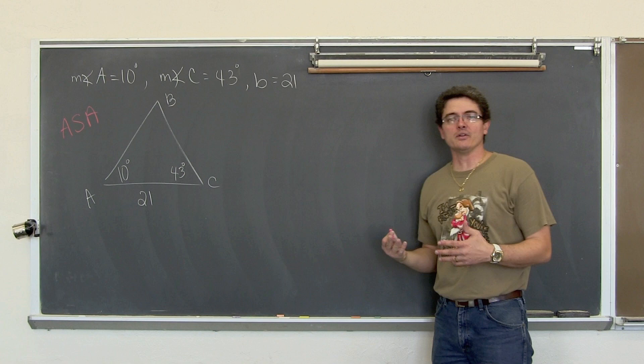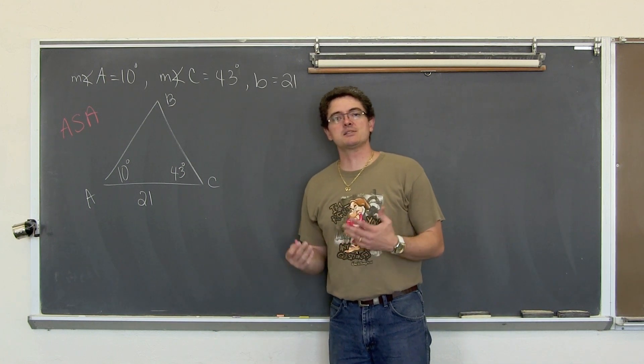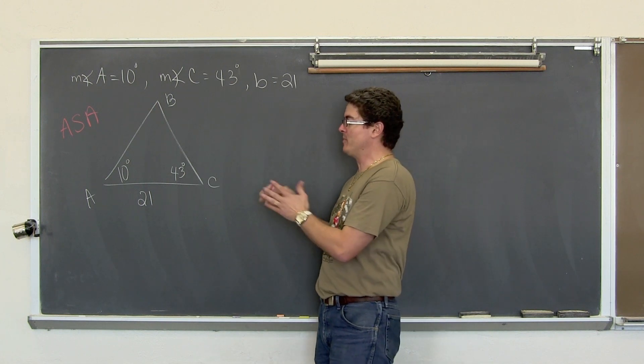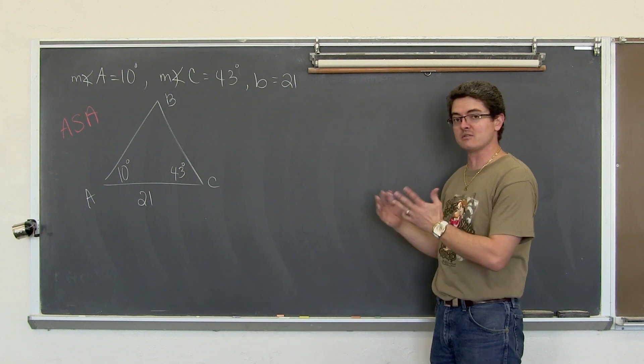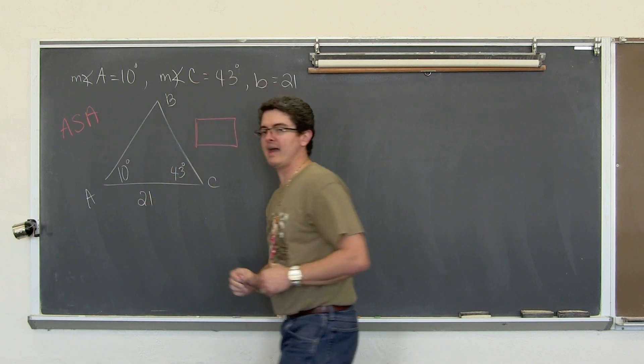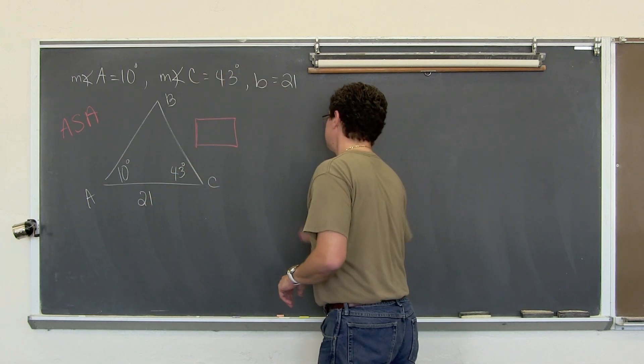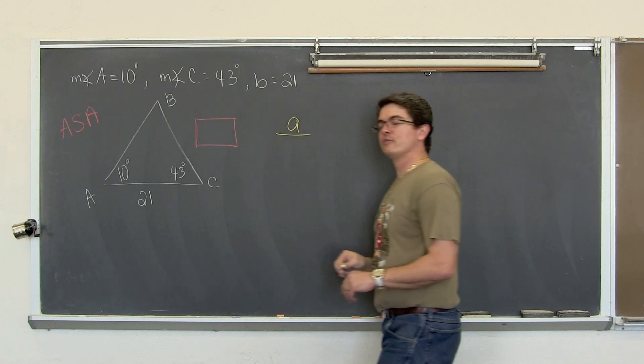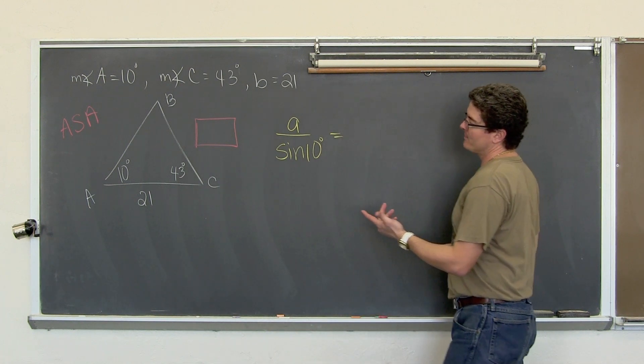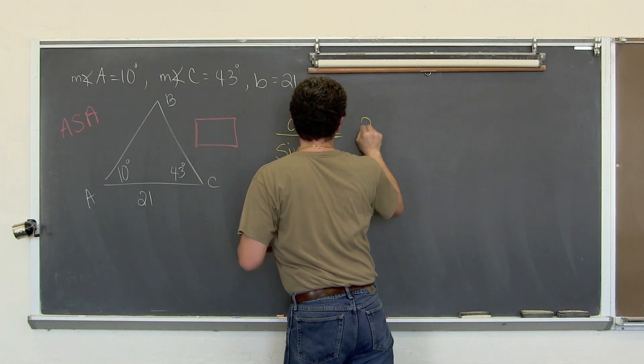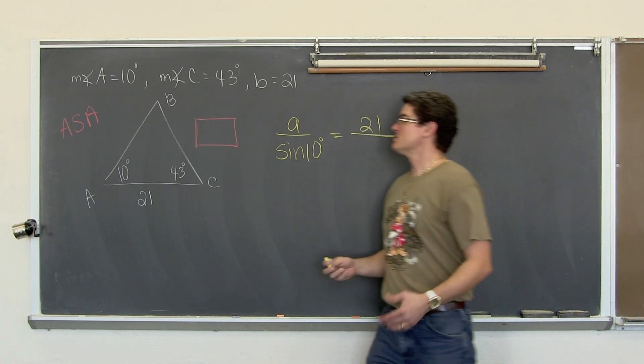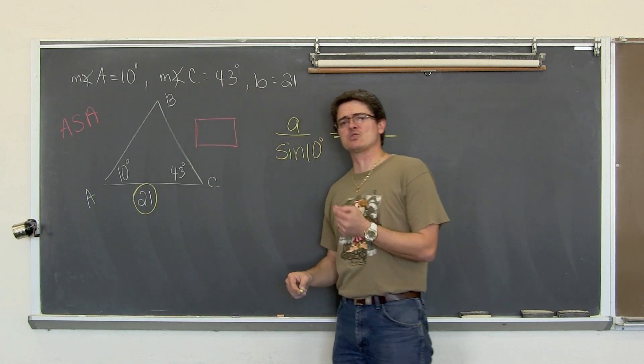A is 10 degrees. Clearly that is almost 45 degrees the way I have drawn it. Angle C is 43 degrees, and side b is 21 units. Now if I go around this triangle, my information is given to me in the angle-side-angle pattern.